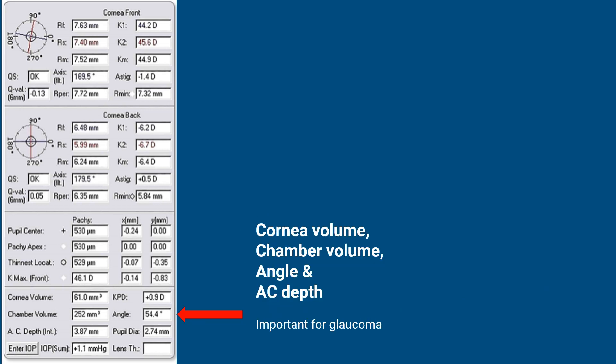The last parameters are cornea volume, anterior chamber volume, angle, and anterior chamber depth. These are important in glaucoma and will be considered in VPL 1.12, which is the screening lecture.